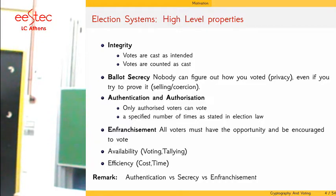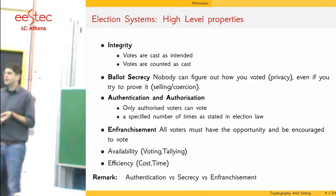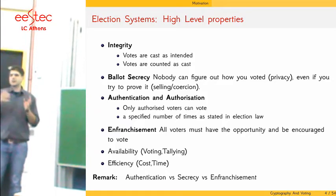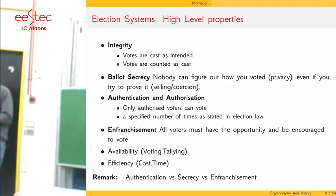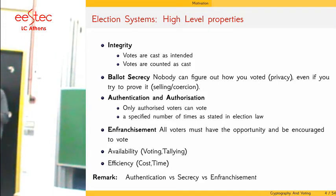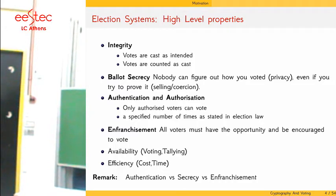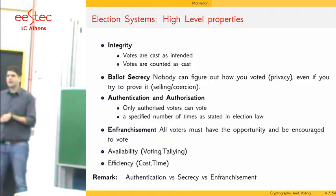The next property is very important and is called enfranchisement. Voters should be encouraged to vote — this is very important because if a voter does not trust the voting system he will have doubts as to whether his vote will be counted. The voting system will also have to be available both in the voting phase and in the tallying phase when you count the votes, and of course the voting system must be efficient in both cost and time.